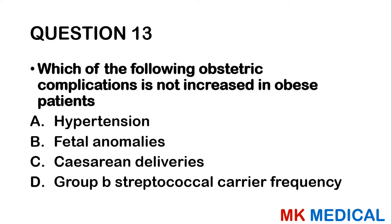Question 29: In puerperal pyrexia, which is false? A — commonly results in maternal mortality. B — usually appears 2–10 days after delivery. C — cannot be caused by chlamydia. D — temperatures must be at least 38 degrees. Puerperal pyrexia can be caused by infections including chlamydia. The statement that it cannot be caused by chlamydia doesn't make sense. The answer is C.